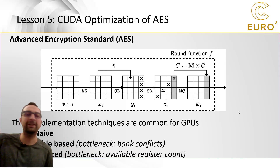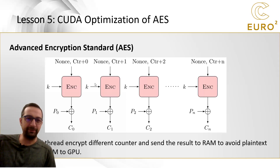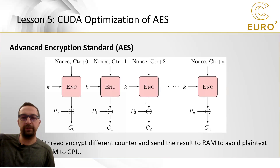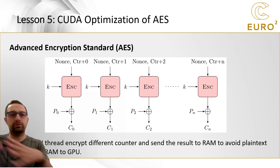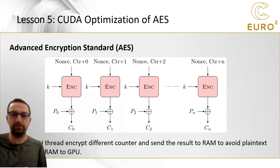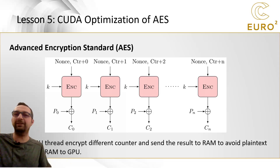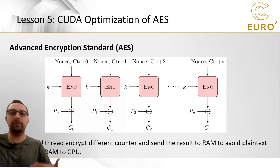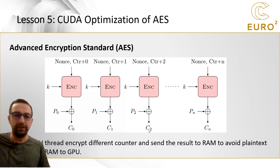Let's focus on the table-based implementation. Each GPU thread encrypts a different counter value and sends the result to RAM. You can perform the XOR operation on the CPU side in RAM, not in GPU global memory. This means you don't need to copy the plaintext to the GPU and copy the ciphertext back, so you eliminate memory copy operations. Each thread uses its thread number as the counter for encryption and sends the result to the CPU.